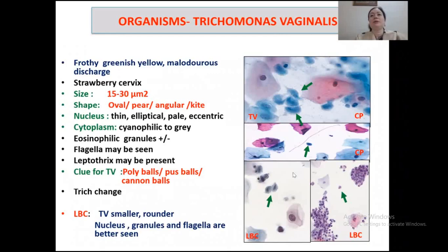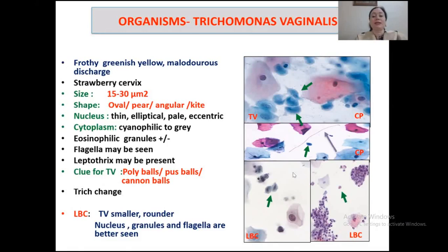Symptoms appear within 5 to 28 days of exposure. The vaginal and cervical walls are congested with punctate hemorrhage, resulting in a strawberry appearance. The organism is 15 to 30 microns in size, oval to pear-angulated to kite in shape, having a thin elliptical pale eccentrically-placed nucleus, eosinophilic to gray cytoplasm with eosinophilic granules. These organisms are shown by green arrows in the picture. Flagella may sometimes be seen in the smear.